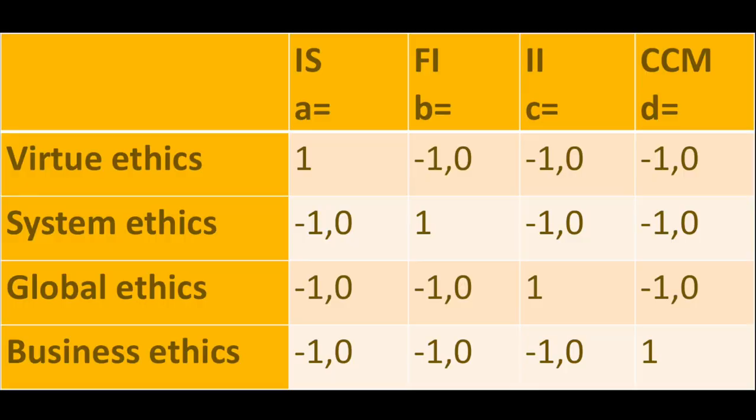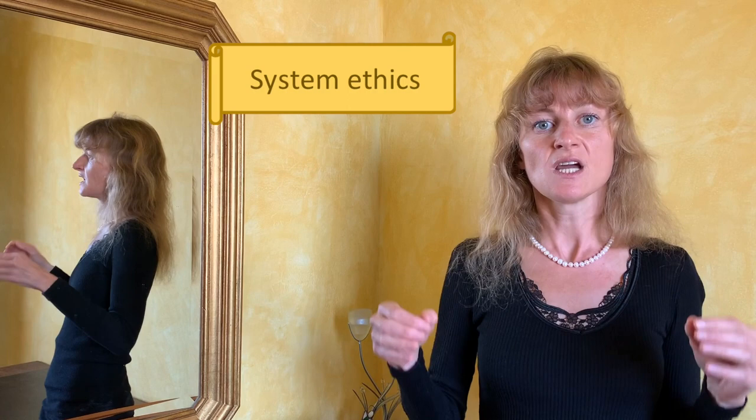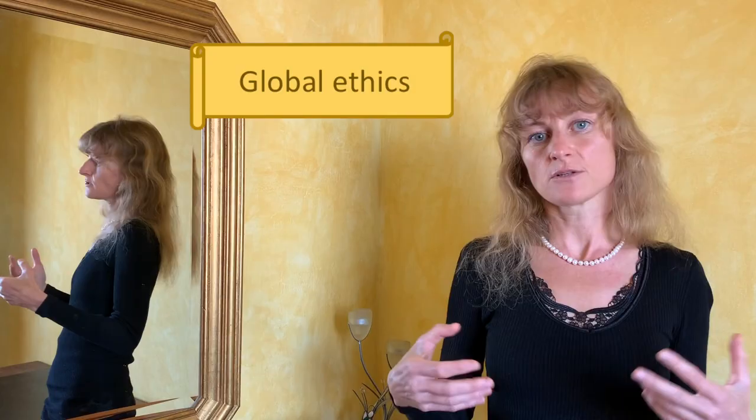This equation informs us as well about various ethical approaches in business. The table below presents this in a more systemised way. For instance, virtue ethics accentuates the IS variable. System ethics is more focused on good formal institutions. Global ethics sees the source of change in informal institutions such as cultural and mental models.